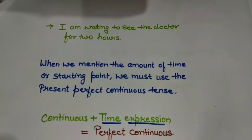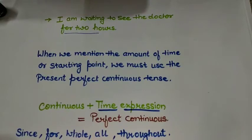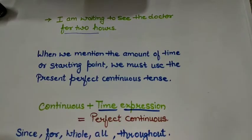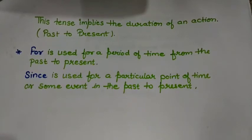Whenever we mention the amount of time, we use 'for,' like 'I have been waiting to see the doctor for two hours.' Whenever we mention the starting point, we use 'since.' A useful formula: continuous + time expression = perfect continuous. Time expression implies the duration of an action. Words like 'since,' 'for,' 'whole,' 'all,' and 'throughout' show time expressions. 'For' covers a period of time from past to present; 'since' refers to a particular point of time or event in the past to present.